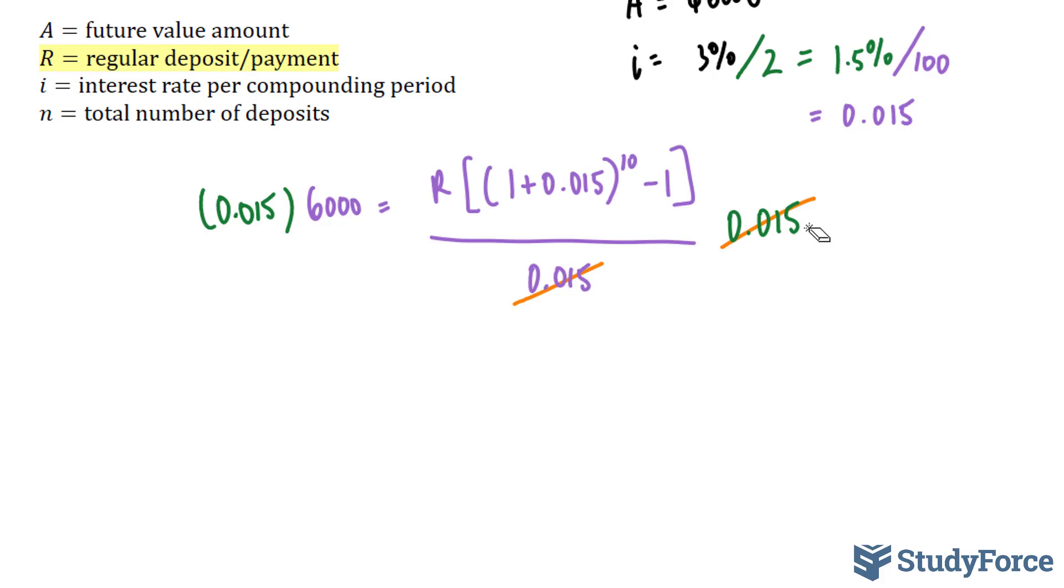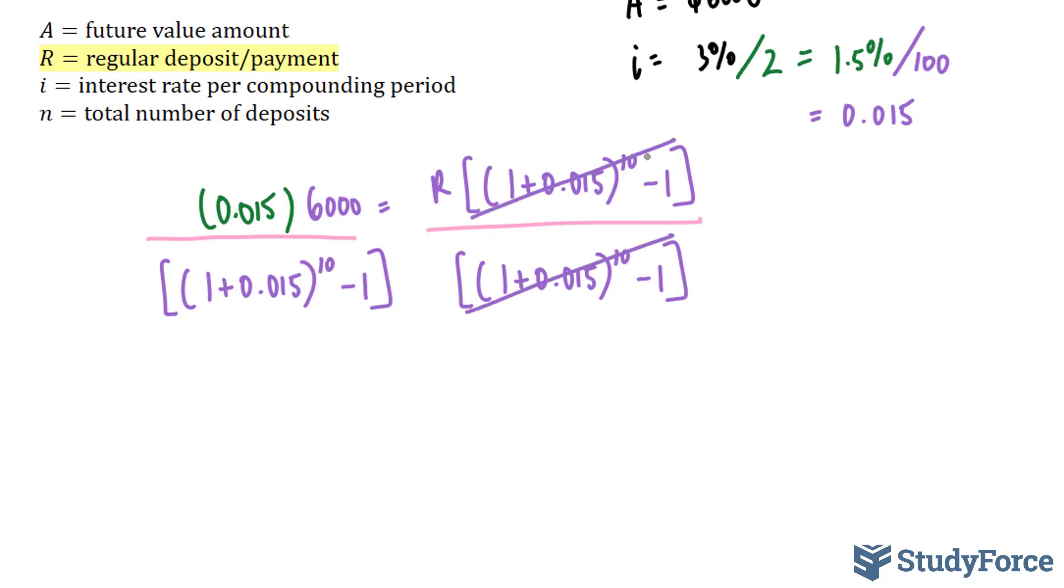So what I have left is the following statement. I have the left side of the equation and the right side of the equation. Now, I'll divide both sides by this. Notice what I did here is that I divided the right side and the left side by this expression. This cancels it out on the right side. And on the left side, we have the following statement.